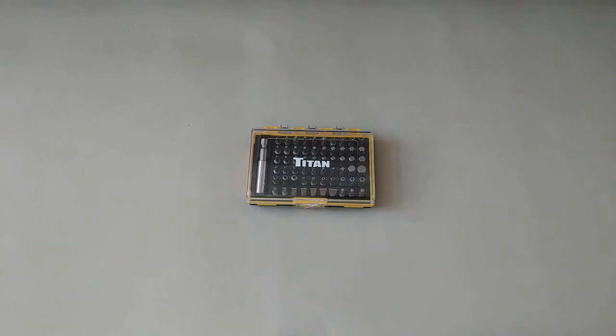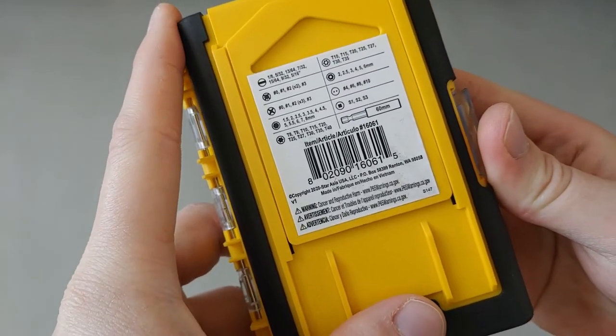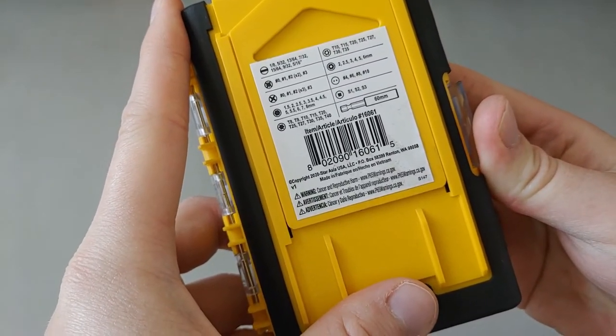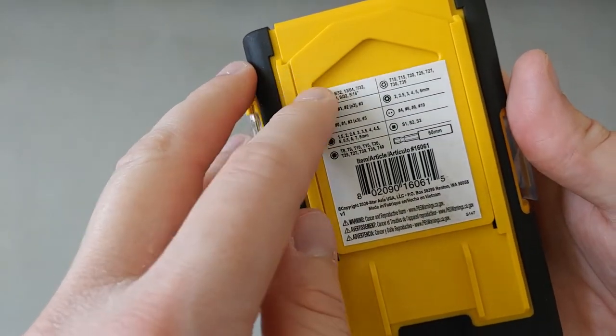Welcome to Hand Tool Reviews. Today we'll be reviewing Titan Tools 16061, 61-piece security bit set. I'll go ahead and show you what it comes with. The part number is 16061 and it comes with the following bits.